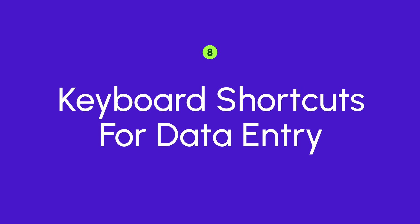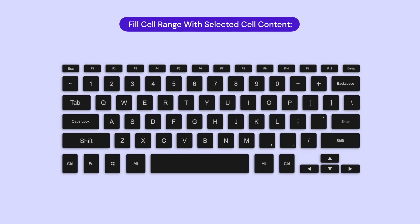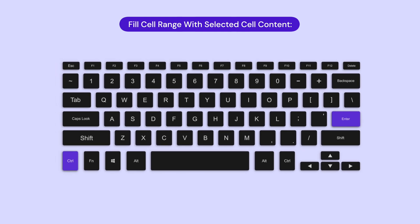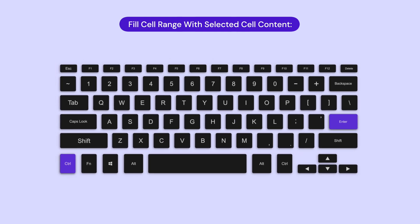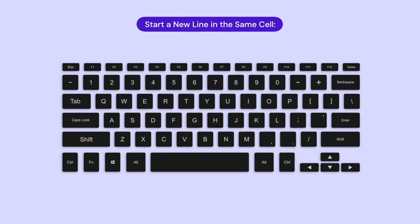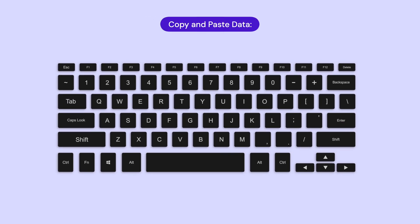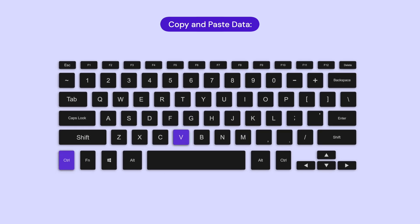Next up are keyboard shortcuts for data entry. Data entry can be a tedious process, but these shortcuts can make it a breeze. To fill a cell range with the currently selected cell's content, hold Ctrl + Enter. To start a new line in the same cell, hold Alt + Enter. And to copy and paste data, use Ctrl+C and Ctrl+V respectively. These shortcuts will make your data entry process quicker and less error prone.